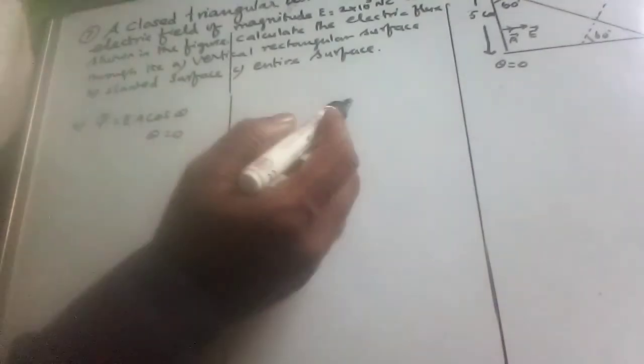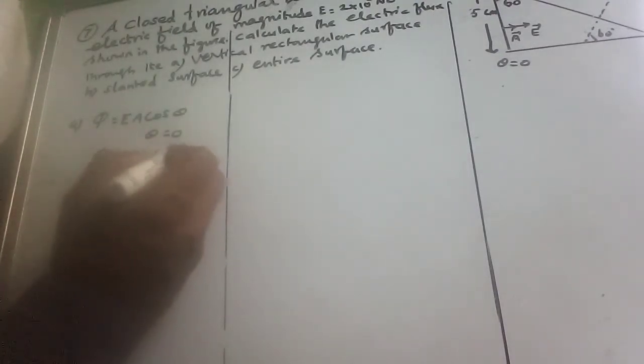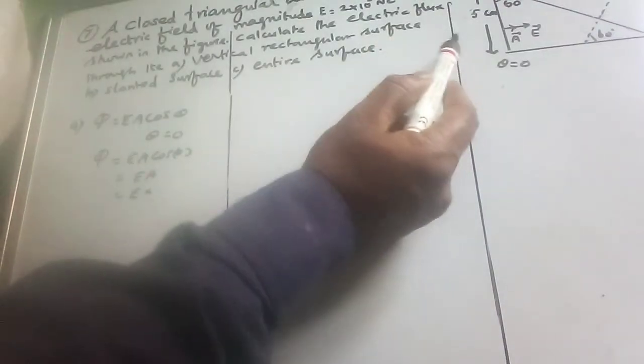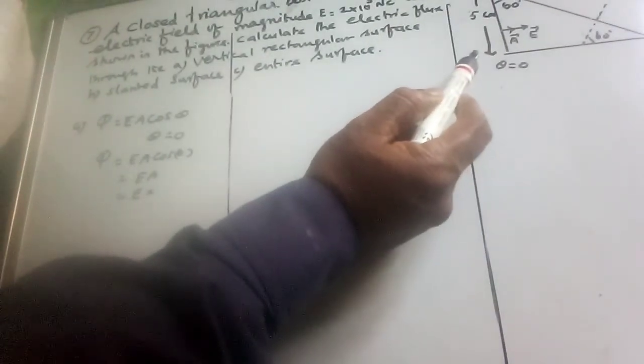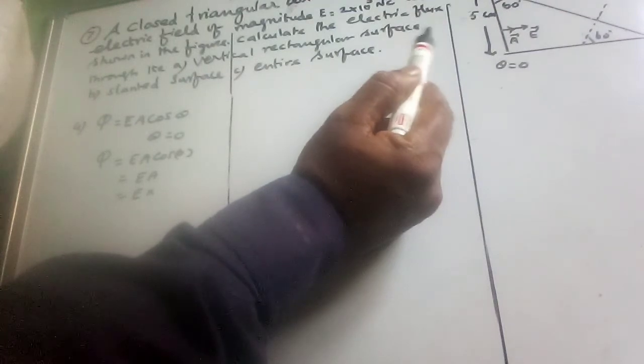Since theta is equal to 0 between the electric field and area vector, phi is equal to EA into cos 0 which is equal to 1. So phi equals EA. This is the area of breadth into height.